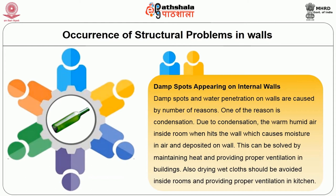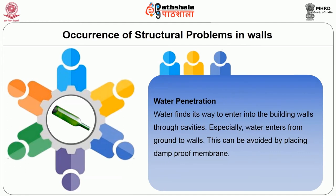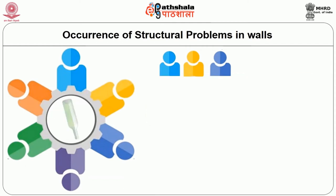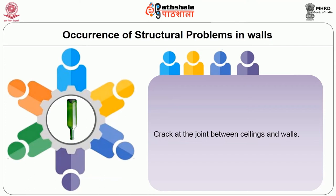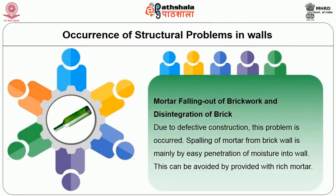Drying wet clothes inside rooms should be avoided and proper ventilation in kitchens should be provided. Water penetration: water finds its way into building walls through cavities, especially entering from the ground. This can be avoided by placing damp-proof membranes. Spalling of mortar from brick walls is mainly caused by easy penetration of moisture, and this can be avoided by providing rich mortar.